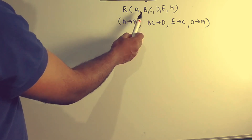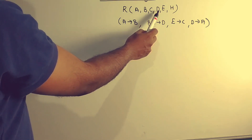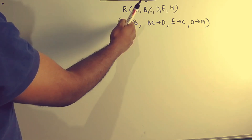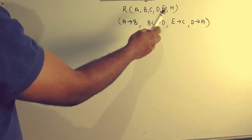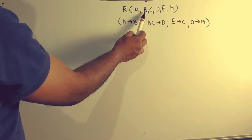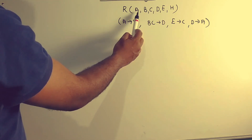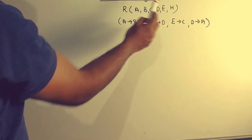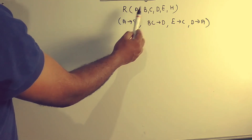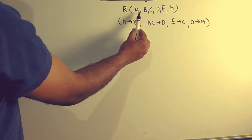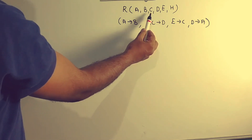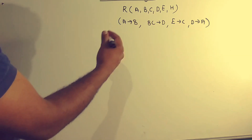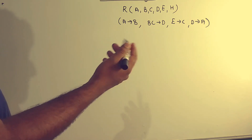For each of the attributes A, B, C, D, E, we can use all combinations. We have to use A, B; A, C; A, D; A, E; A, H. We also have to use A, B, D and all such combinations.